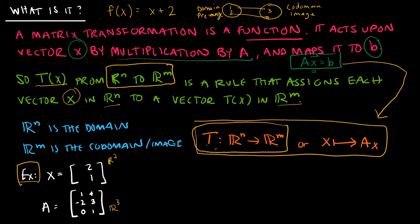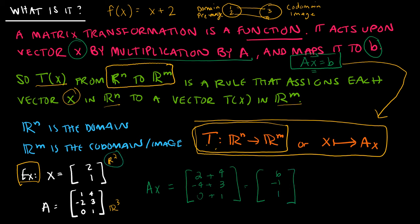Let's go ahead and do this example. If I have vector x and matrix A, I'm trying to find Ax. I take 1 times 2 plus 4 times 1, negative 2 times 2 plus 3 times 1, and 0 times 2 plus 1 times 1. So Ax equals the vector [6, -1, 1]. I started with something in R2 and ended with a result in R3 — it's just a mapping or a function.